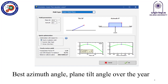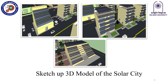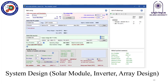We selected a tilt angle of 30 degrees, which is optimal for this location throughout the whole year, to avoid the extra expense of using tracking systems. The design is built using 3D models of the whole city, and we generate about 3.2 megawatts of power from this station.